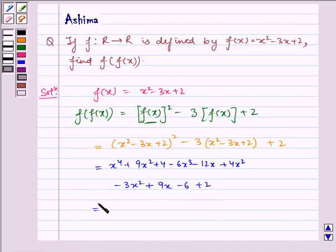Now we see that this gets cancelled with this. So we are left with x⁴ - 6x³ + 10x² - 3x.